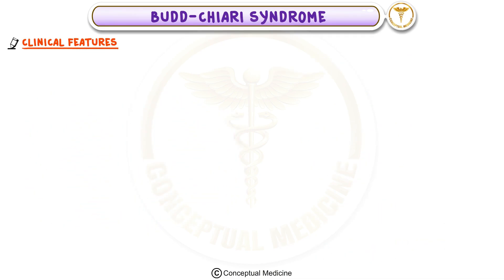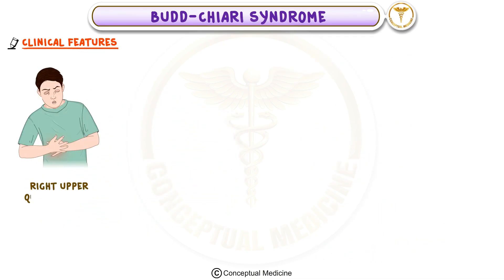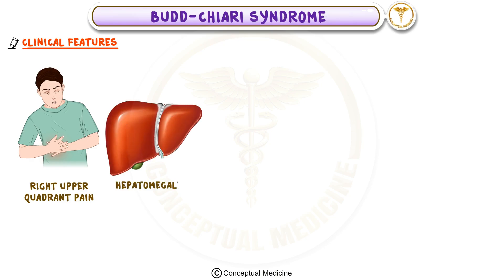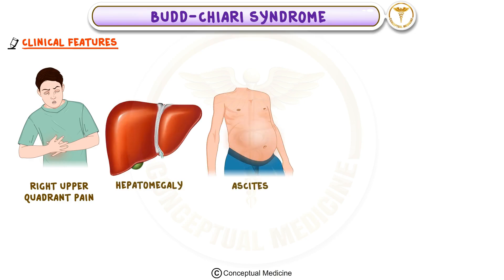Clinically, patients often present with symptoms such as right upper quadrant abdominal pain, which is usually due to stretching of the liver capsule. They may also have hepatomegaly, meaning an enlarged liver, and ascites, which is fluid accumulation in the abdomen. Jaundice can also occur, indicating that the liver's ability to process bile is impaired.